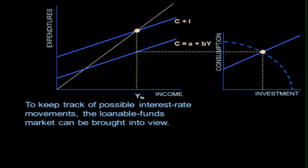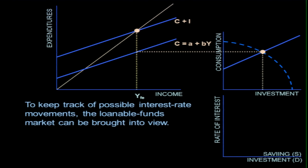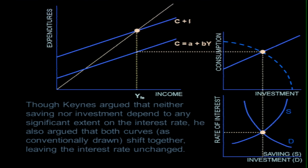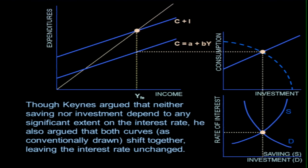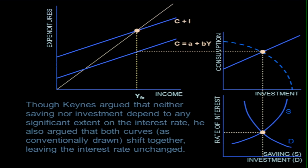To keep track of interest rate movements, the loanable funds market can be brought into view. Here it looks like I'm doing something sort of against Keynes because he threw out the loanable funds market. And here we put it back in. There's a supply of it and a demand for it. And I can show you here why he threw it out. Because he came to believe that the interest rate didn't affect anything.